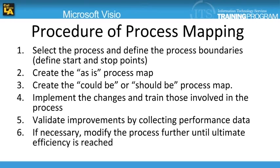The following procedure can be used to create a process map. First, select the process and define the process boundaries. Next, create the as-is process map. And then go ahead and create the could-be or should-be process map.